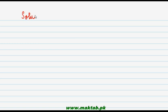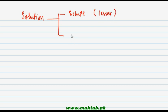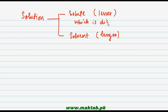A solution is basically made of two things: one is the solute, which is used in lesser quantity, and the other is the solvent, which is used in larger quantity. The solute is the thing in a solution which is dissolved (جو کہ حل ہوتی ہے), and the solvent is the thing which dissolves (جو کہ حل کرتی ہے).